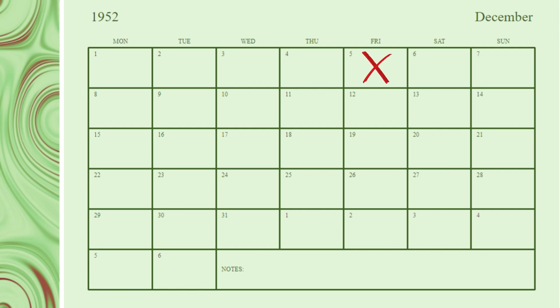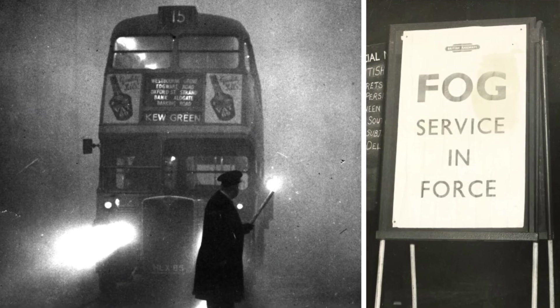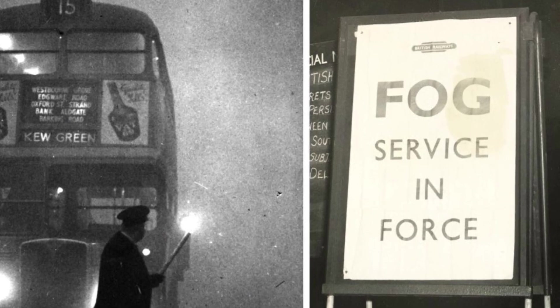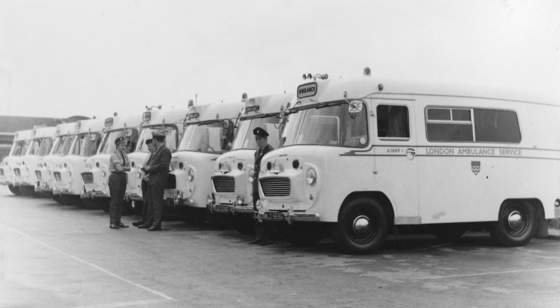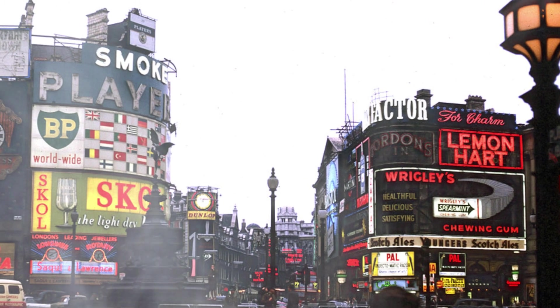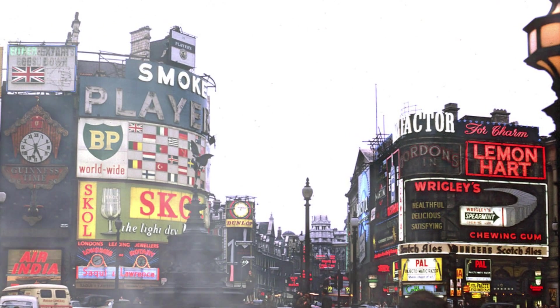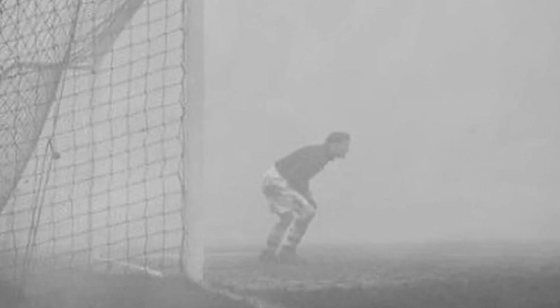It started on Friday 5th December and lasted a number of days, bringing the city to its knees. Transport came to a standstill, despite the best efforts of police to keep it moving. Public transport ceased due to the poor visibility, apart from the London Underground, and the ambulance service also stopped. The smog was so dense that it even seeped indoors, resulting in the cancellation or abandonment of concerts and film screenings, as well as many outdoor sports events.